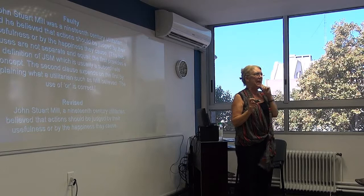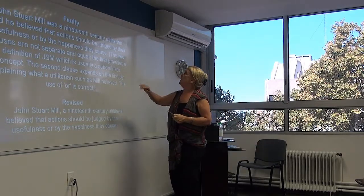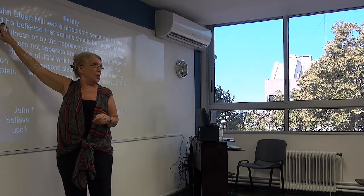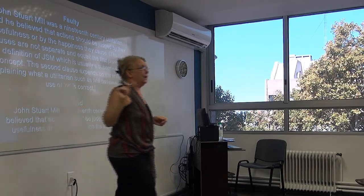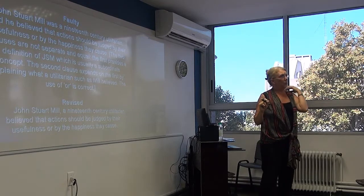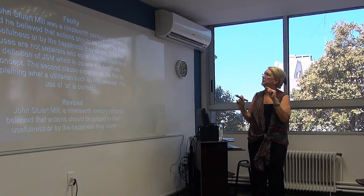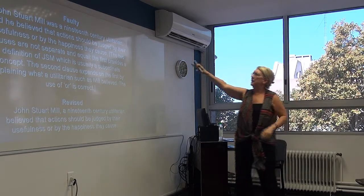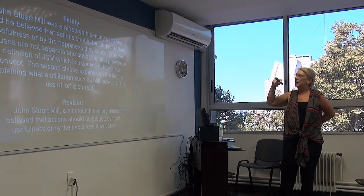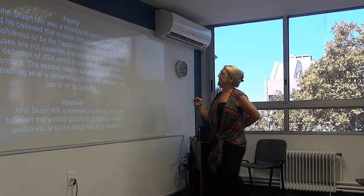Another way we teach it is that you might use the wrong coordinator, or you might be coordinating ideas that are not equal. This gets a little bit more complex. Let's look at the example. John Stuart Mill was a 19th century utilitarian, and he believed that actions should be judged by their usefulness or by the happiness they cause.